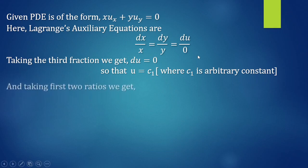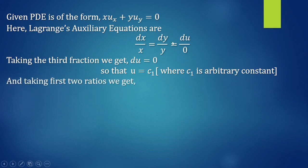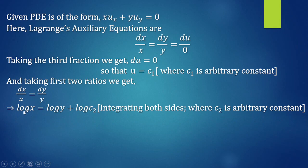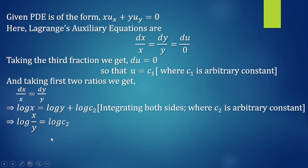Taking the first two ratios, we get dX/X equals dY/Y. Integrating both sides, we get log X equals log Y plus log C2, where C2 is the arbitrary constant. From here we can write log(X/Y) equals log C2, so X/Y equals C2.